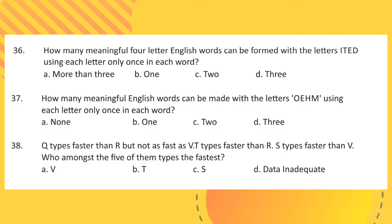Question 37: How many meaningful English words can be made with the letters O, E, H, M, using each letter only once in each word?